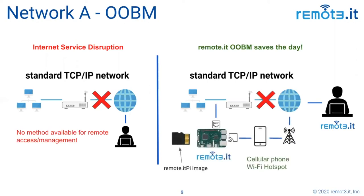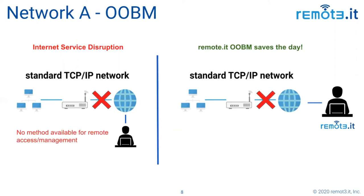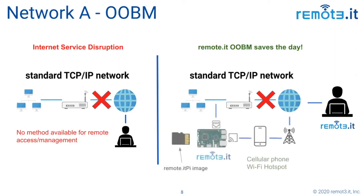What out-of-band management means in this scenario is that if I have a device — I'm showing a Raspberry Pi here — with the other clients behind that router, and that device is equipped with Remote.it in an out-of-band fashion, then that device can join a Wi-Fi hotspot hosted by anybody's cellular phone, and that gives us a path even though the primary internet gateway is down.